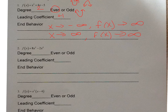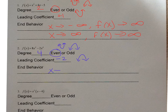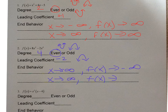Problem 2: f(x) = 8x² - 2x⁴. My degree is 4, which is even — so I'm thinking either both up or both down. My leading coefficient is negative 2, which is negative, so both ends open down. As x goes to negative infinity, f(x) goes to negative infinity. As x goes to positive infinity, f(x) also goes to negative infinity.